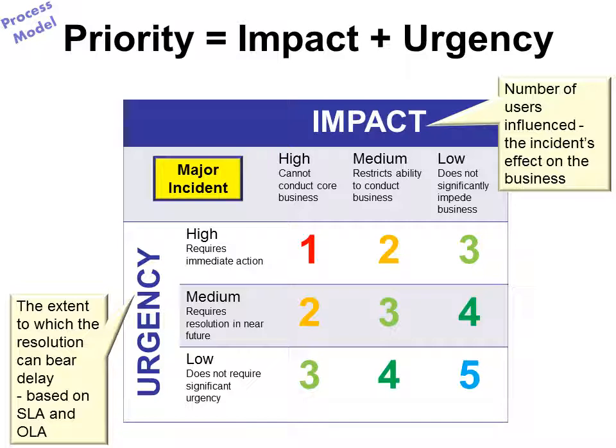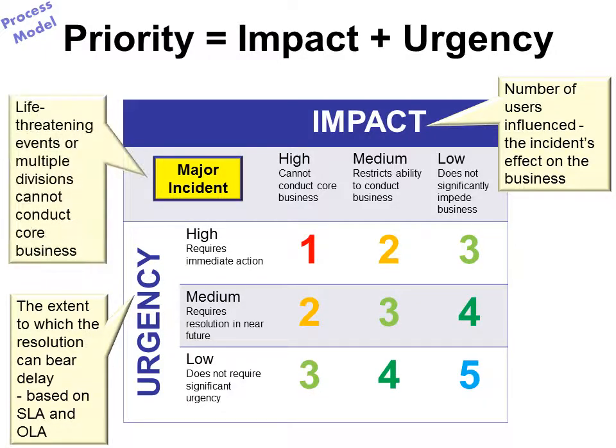Based on that, you must determine what the impact is. However, sometimes there's a life-threatening event and multiple divisions cannot conduct core business. This is called a major incident — it is outside the priority matrix, and that means all hands on deck: fix that problem first. Incidents are numbered and prioritized based on urgency and impact, so a priority one will be resolved quicker than, say, a priority five.